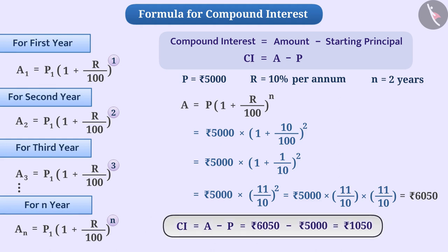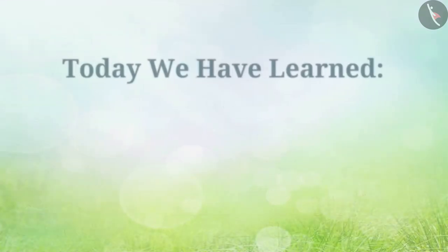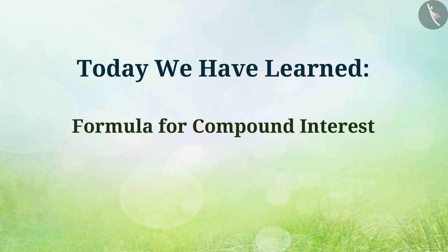CI is equal to A minus P, which is Rs 6050 minus Rs 5000, equal to Rs 1050. In this way, you can calculate compound interest from the formula. Today we learnt the formula for compound interest. In the next video, we will learn more about compound interest from some examples.